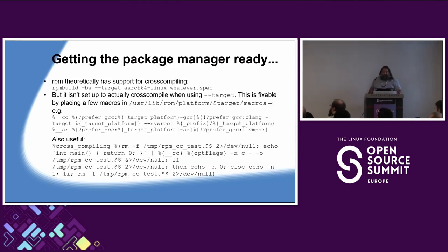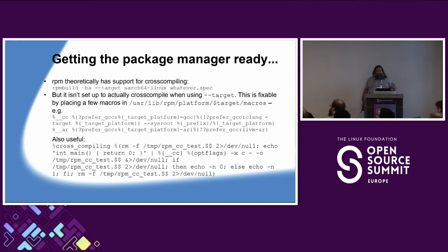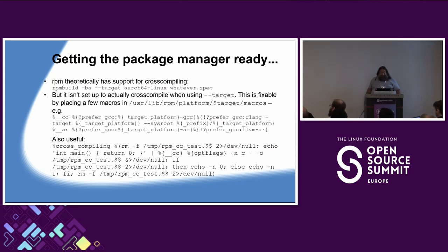First, we get the package manager ready. This is a little specific to RPM, but other package managers have similar features. RPM theoretically has support for cross-compiling built-in — you can run rpmbuild -ba, give it a different target, and pass it the spec file. But unfortunately, out of the box, this doesn't work because RPM isn't set up to do cross-compiles. What you get without tweaking is packages marked as the target architecture that actually contain binaries for the host architecture, which is obviously not going to work.